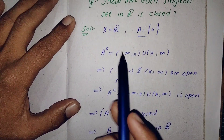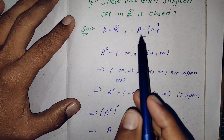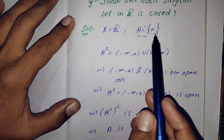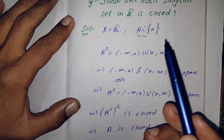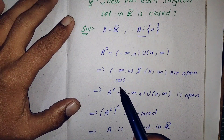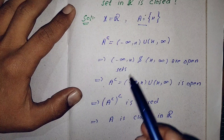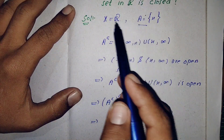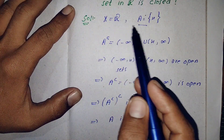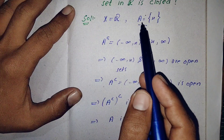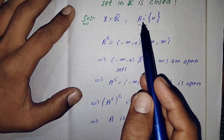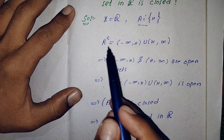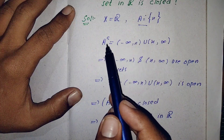To summarize: we took the ground set as R and any arbitrary singleton set A = {x}, where x is any arbitrary element. To show A is closed in R, it is enough to show that A complement is open, because the complement of an open set is a closed set. So we find A complement.